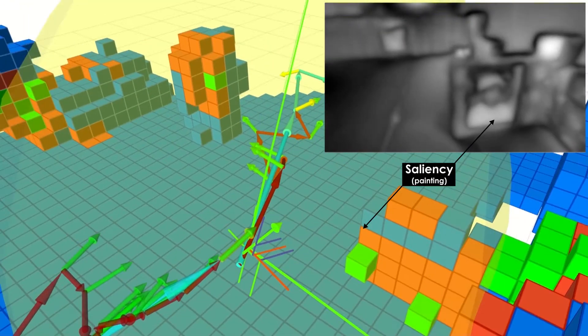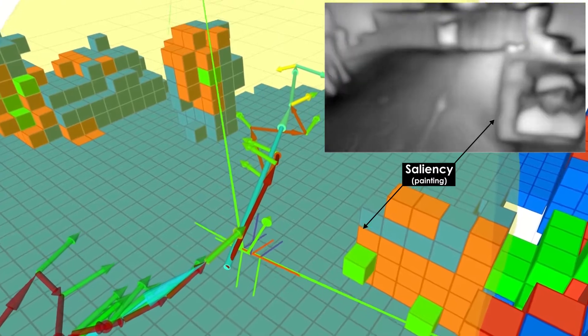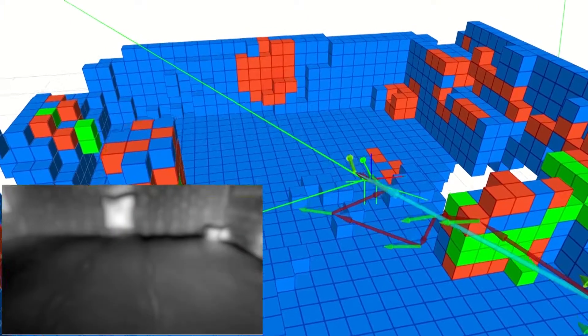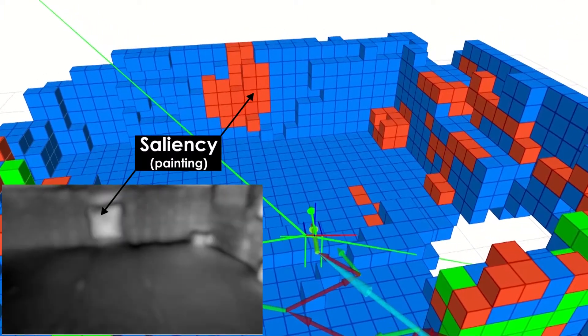Provided this information, a path planning strategy that simultaneously optimizes for exploring unknown space and directing the robot's attention to better observe salient regions is developed. Following a two-step optimization paradigm,